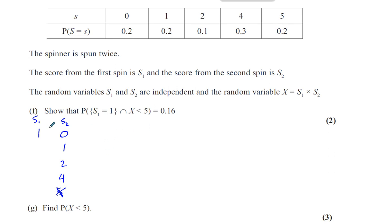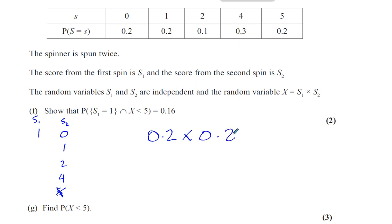The probability of getting a 1 for the first score is 0.2, multiplied by the probability of getting a 0, 1, 2, or 4 on the second spin — that's everything except getting a 5, so it's 0.8, because 1 minus 0.2 equals 0.8. So 0.2 times 0.8 gives you 0.16.